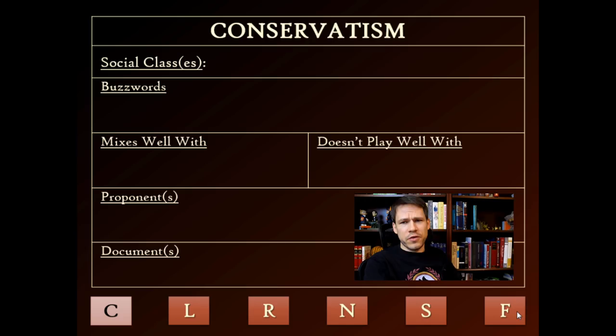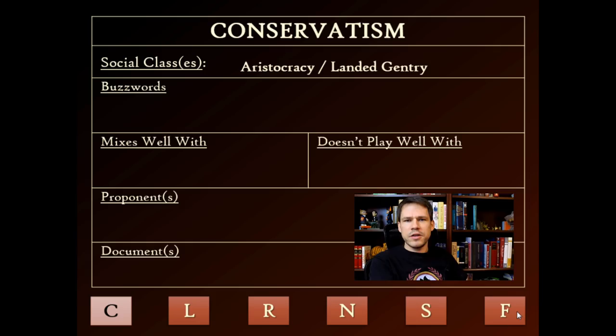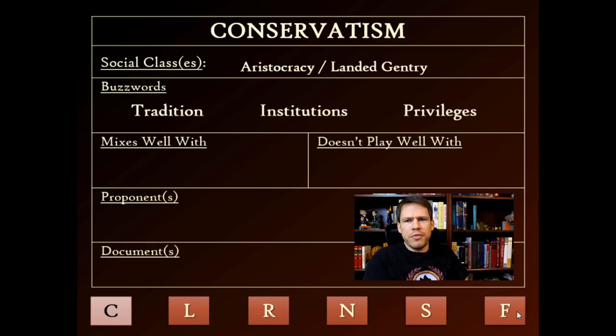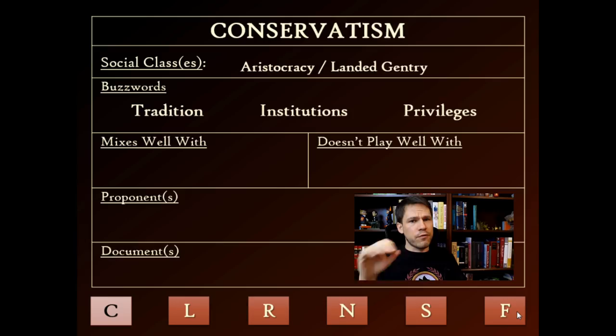I'm going to start off with conservatism. Conservatism attracted predominantly the aristocracy and the landed gentry — these are the people who held a lot of property under the old regime. Buzzwords here: tradition, institutions, privileges. These are people who really defended the old regime and saw some value in what was left there.